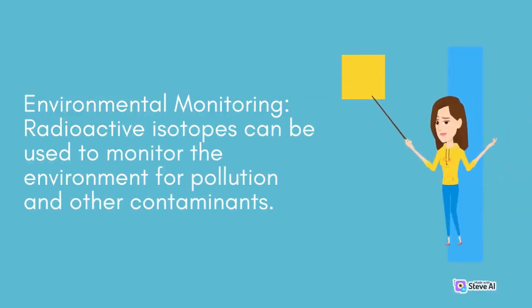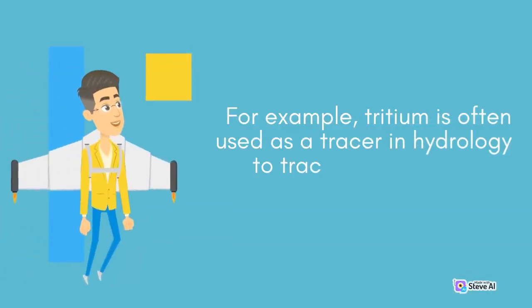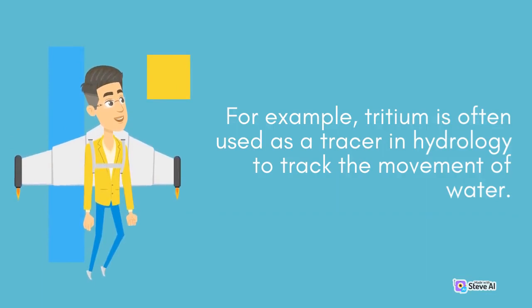Environmental Monitoring: Radioactive isotopes can be used to monitor the environment for pollution and other contaminants. For example, tritium is often used as a tracer in hydrology to track the movement of water.